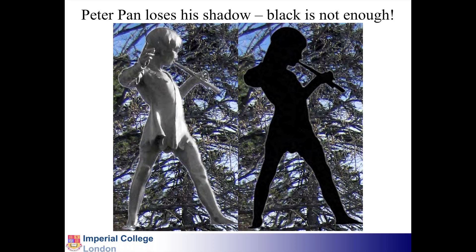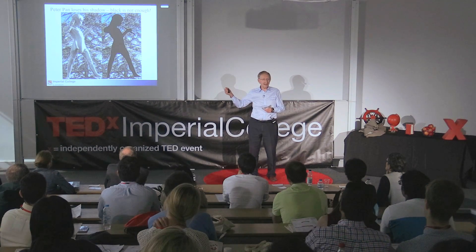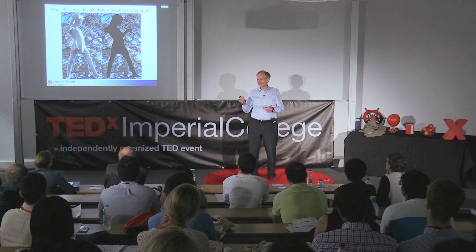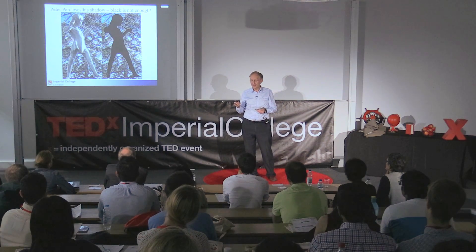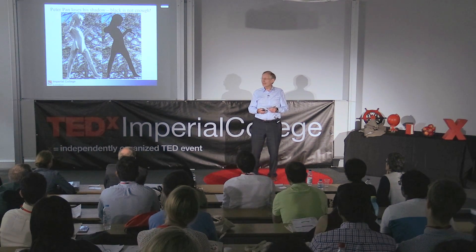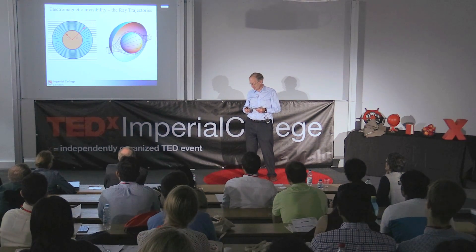What I want to tell you about today is how we've developed some tools and some materials that you can use together to make things invisible. To paint something black is not enough. Conventional stealth, as used to make aircraft invisible to radar, is just making them black. But if I take a black object in a bright room, I know it's there because it has a shadow. So if you want to make something invisible, like Peter Pan, you've got to lose your shadow.